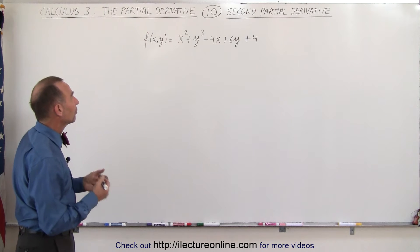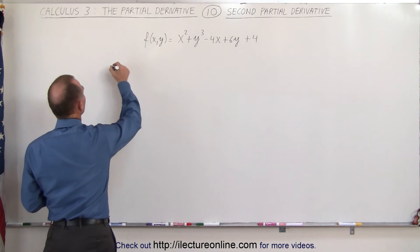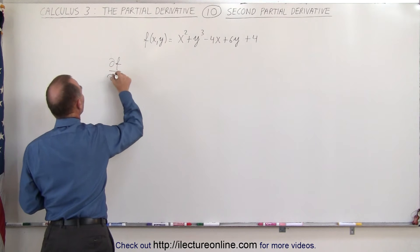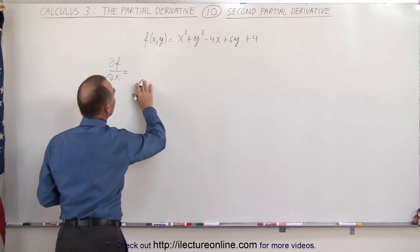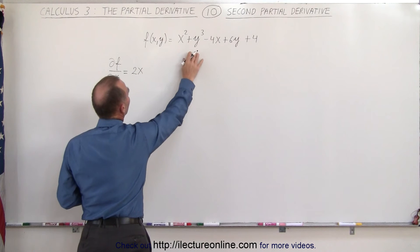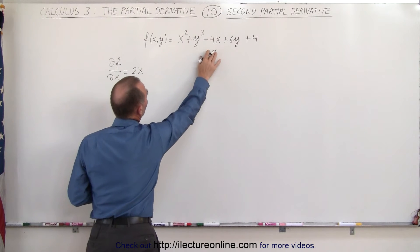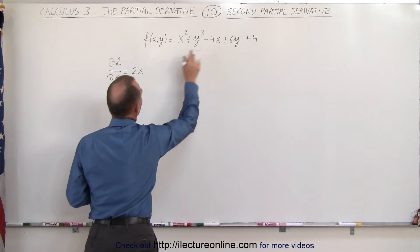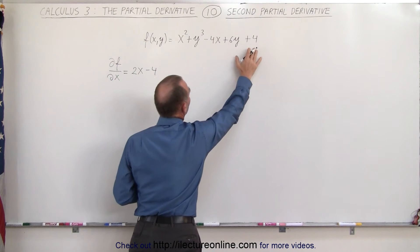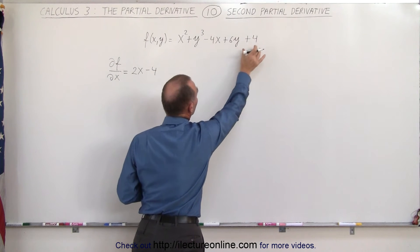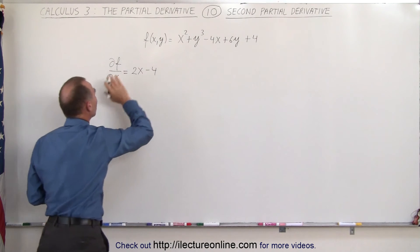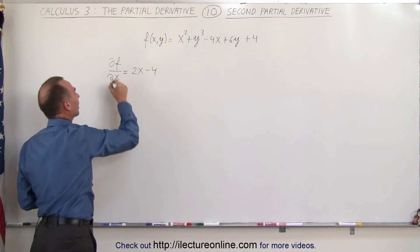Let's first take it with respect to x. So we're going to take the partial derivative of the function with respect to x. Here that's a variable, so we have 2x. This becomes a constant, that is 0. The derivative of minus 4x is minus 4. The derivative of 6y would be 0, and the derivative of 4 is 0 because this is a constant. When we take the partial derivative with respect to x, everything else becomes a constant.